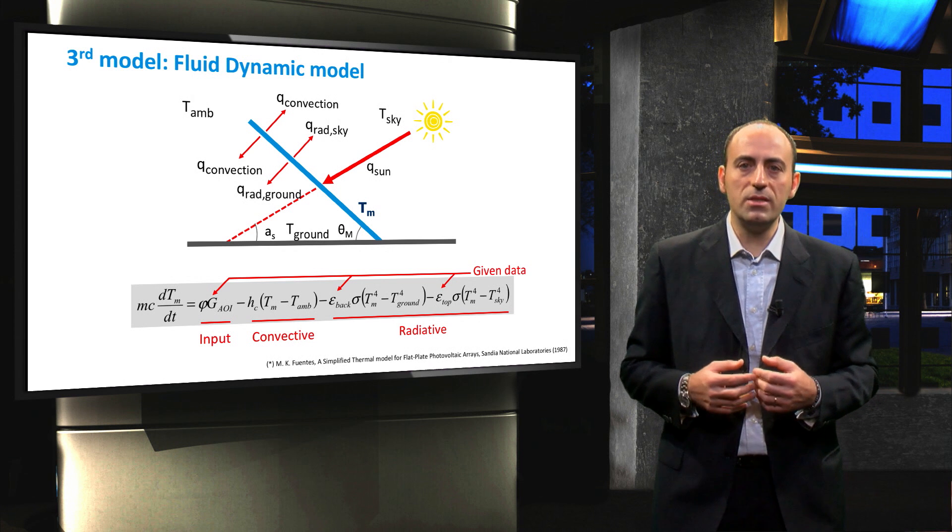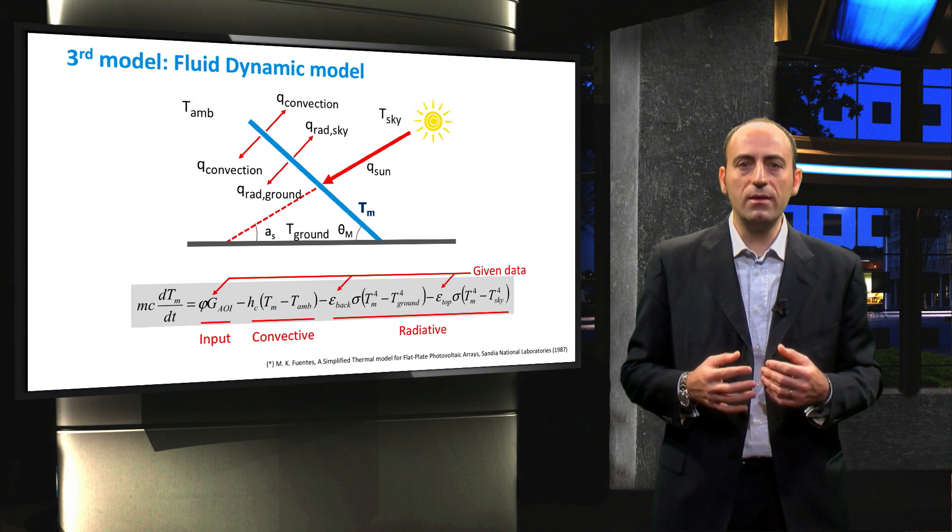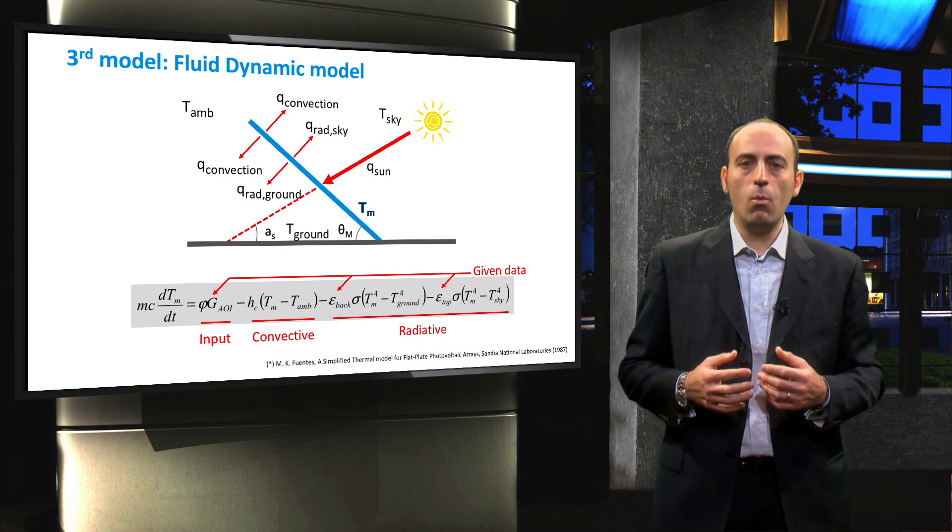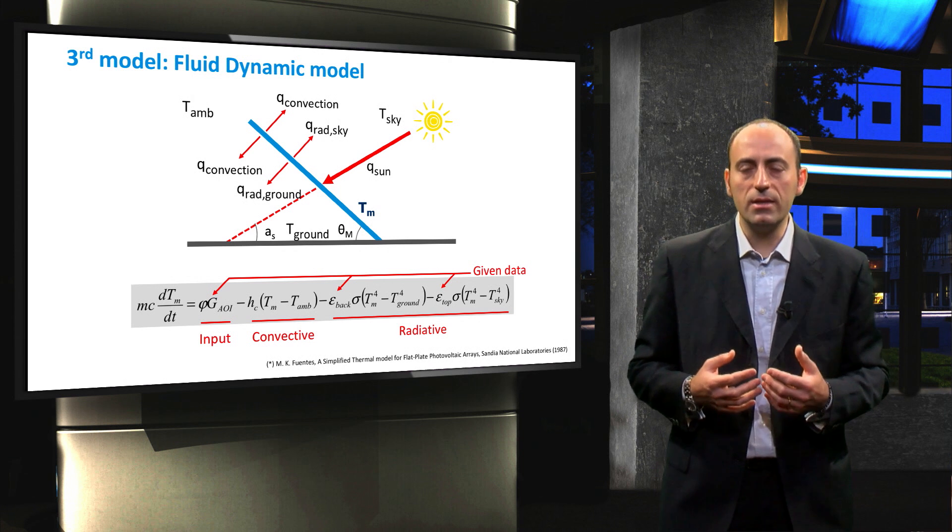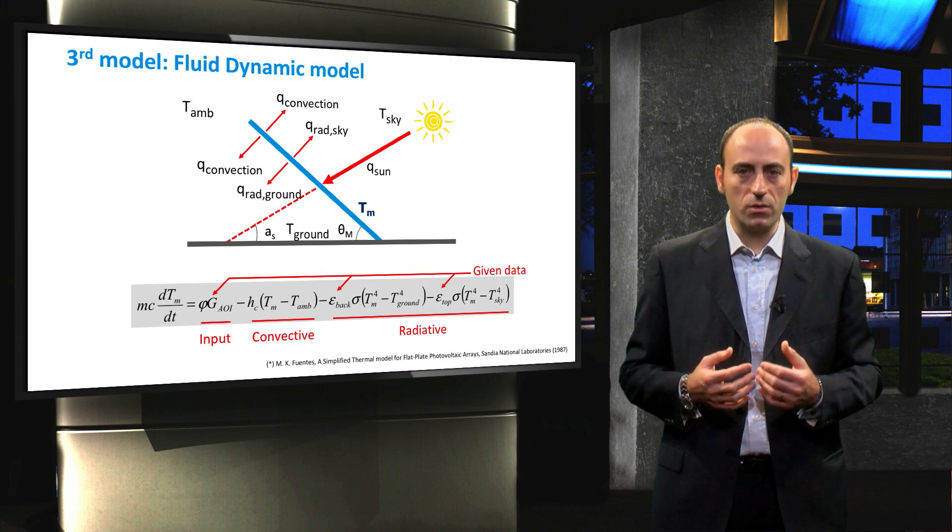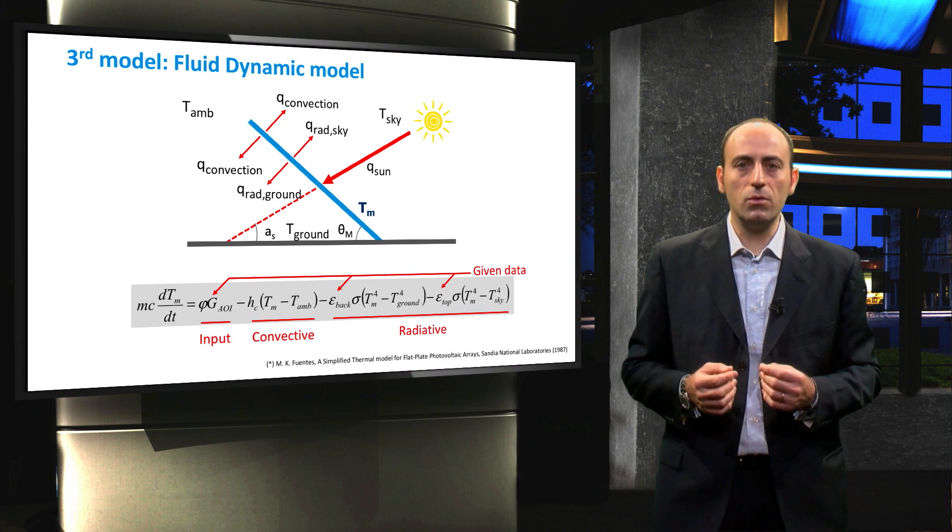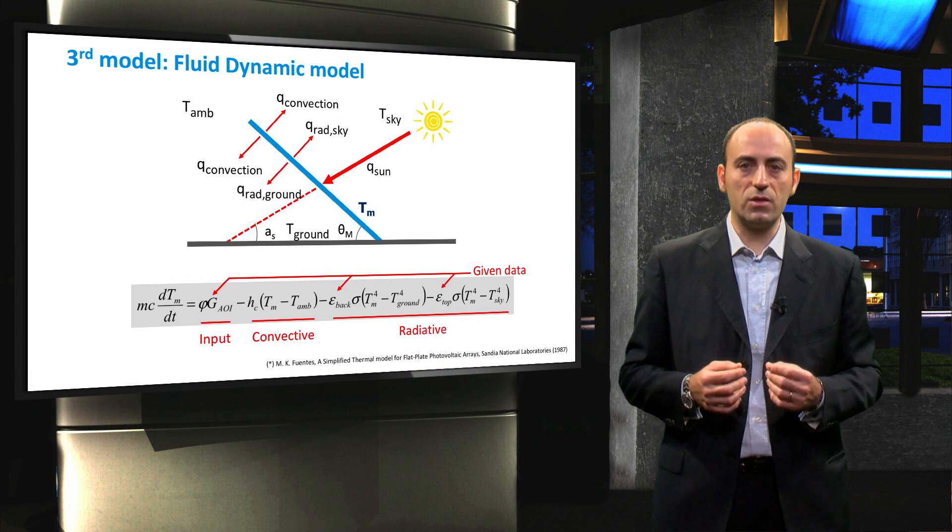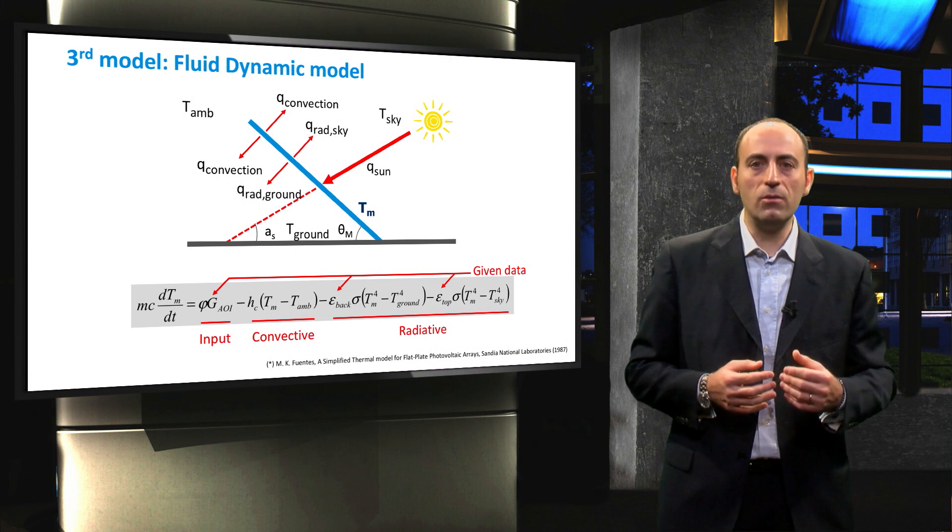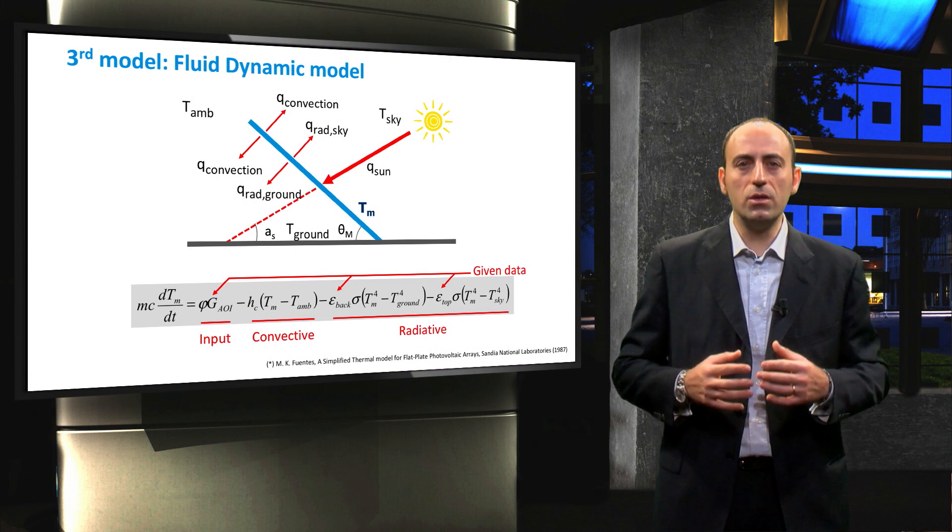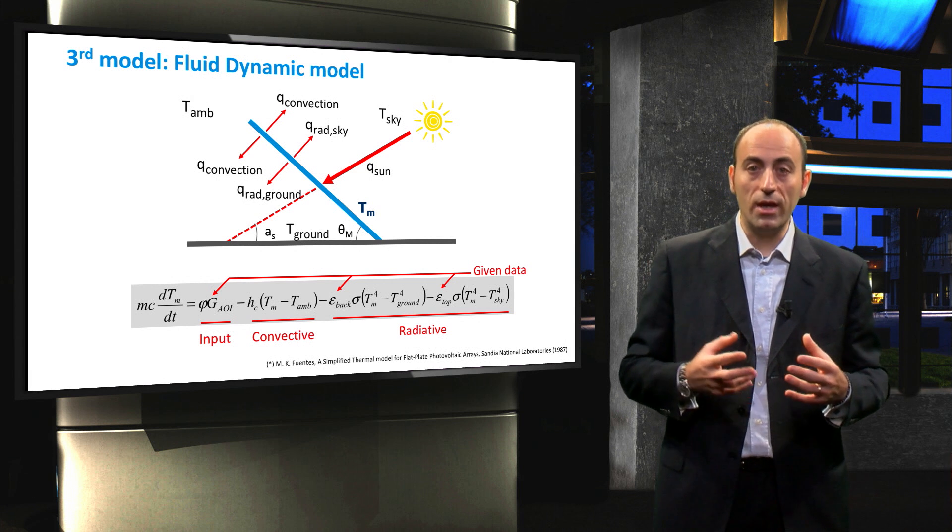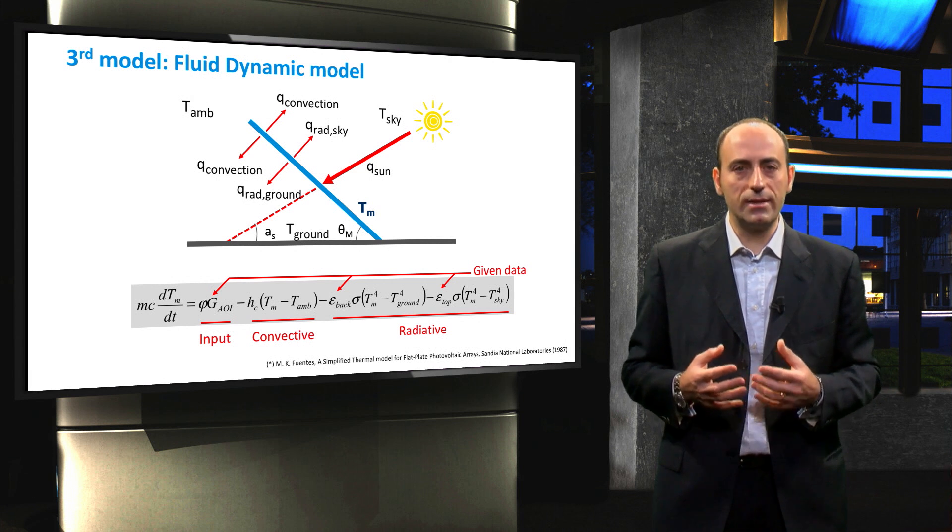These last two data about emissivity are usually given data or they can be calculated, while the absorptivity can be found in the literature and sigma is simply the Stefan Boltzmann constant. It is important to note that the conductive heat transfer between the module and the mounting structure do not appear in the equation because the contact area between the module and the ground is so small that can be neglected.